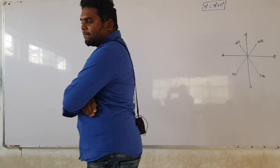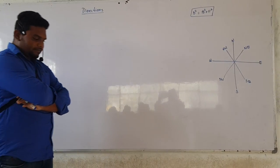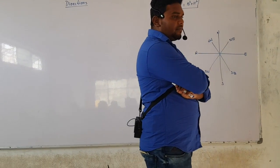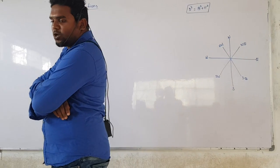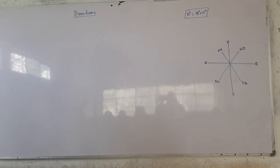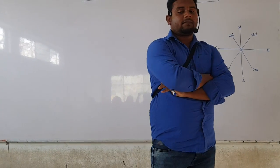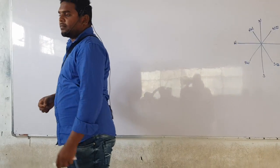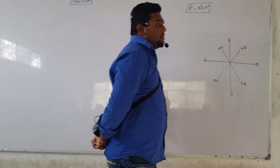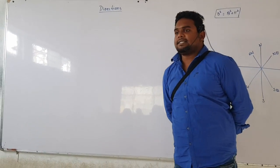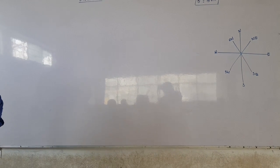And finally, he traveled three kilometers towards north to reach his office. First question: what is the vertical and horizontal distance traveled by him?